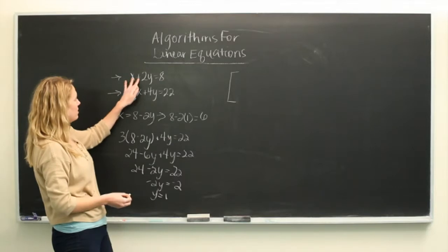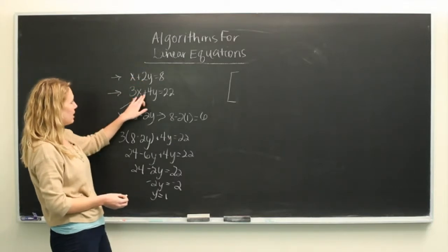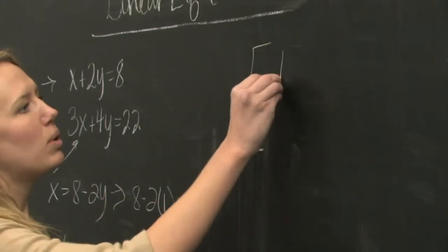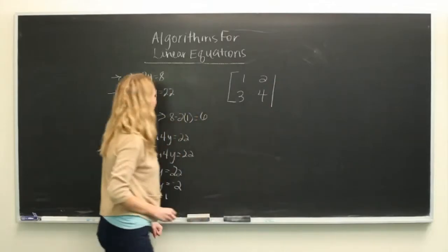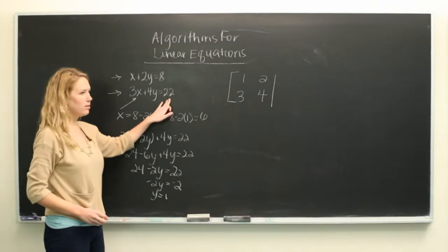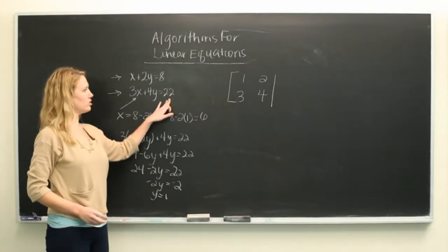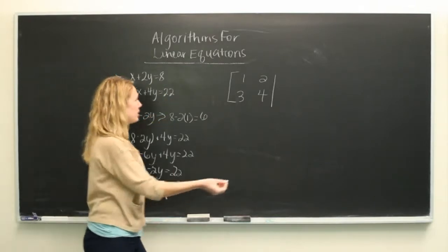So we have a 1, a 2, a 3, and a 4. So 1, 2, 3, and 4. And you just write in the right-hand side to the right of the line. So 8 and 22.